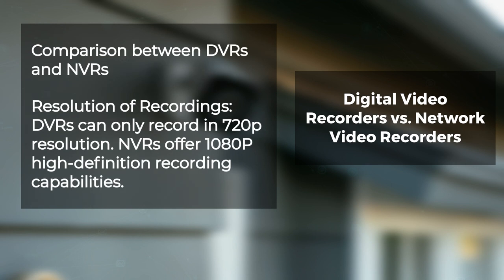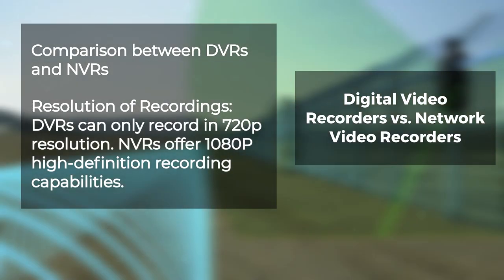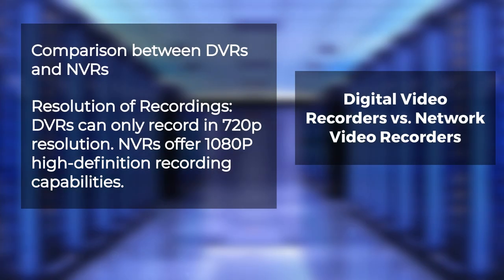Here is a comparison between DVRs and NVRs. In terms of resolution of recordings, DVRs can only record in 720p resolution. NVRs, on the other hand, offer 1080p high-definition recording capabilities and incredible picture clarity.